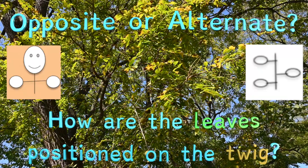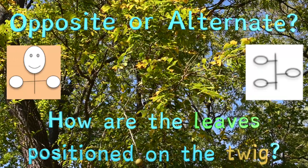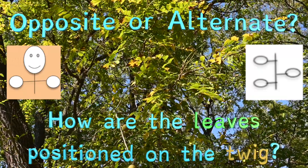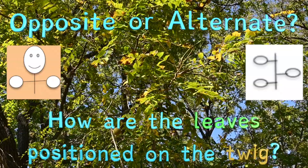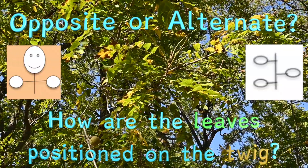Opposite or alternate? How are the leaves positioned on the twig?